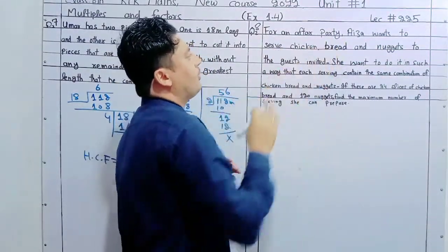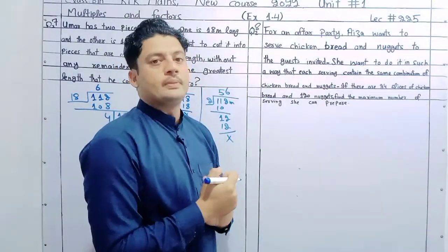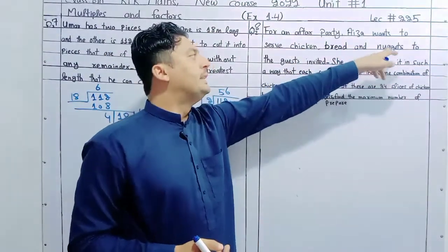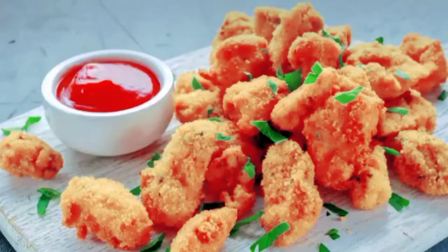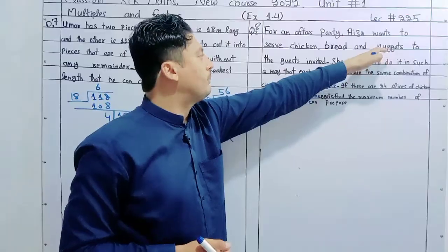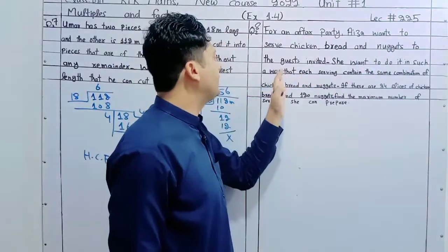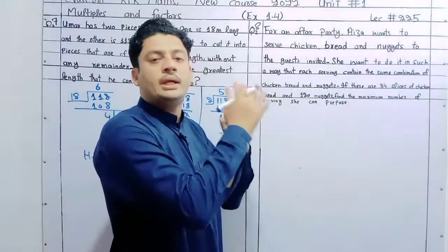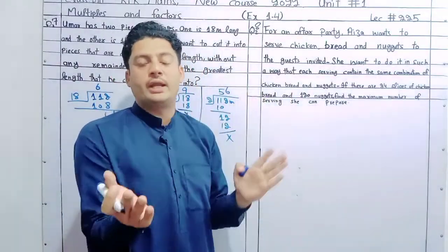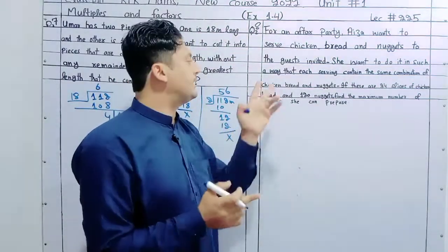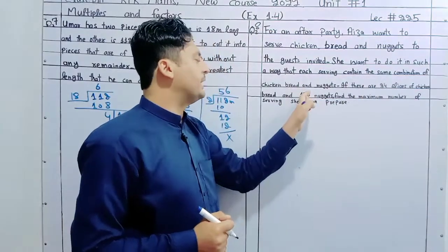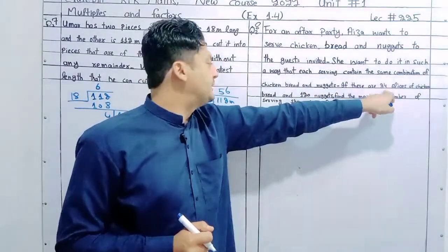The question says: at an after-party, the hostess wants to arrange the food for guests so that each serving has the same combination of chicken bread and nuggets. Each serving is like a tray with the same combination of chicken bread and nuggets. We have 24 slices of chicken bread and 120 nuggets.